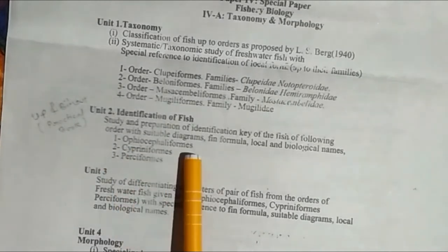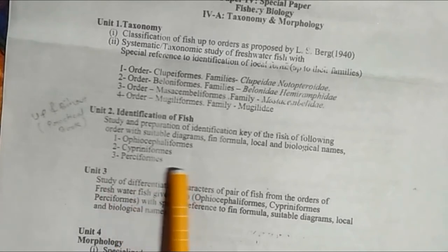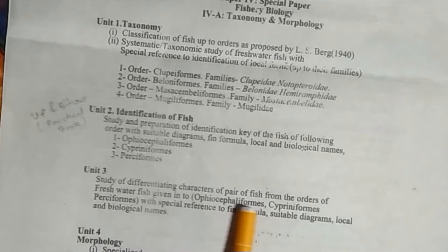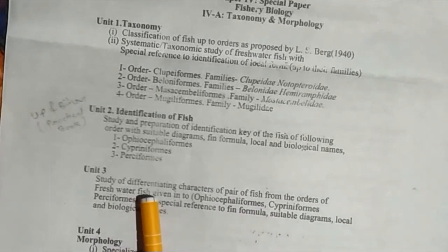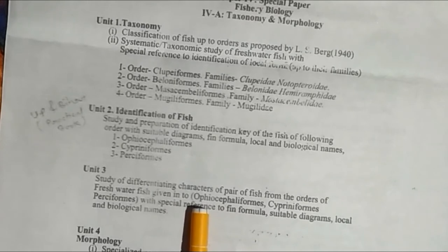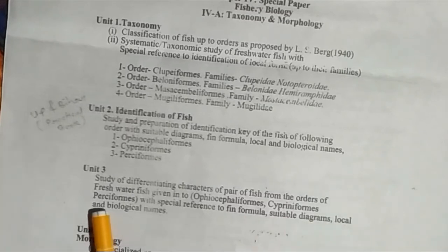The orders covered in Unit Second include Ophiocephaliformes, Cypriniformes, Siluriformes, and Perciformes. Unit Third covers differentiating characters of pairs of fish from the orders of freshwater fish — Ophiocephaliformes and Cypriniformes — and Perciformes, with suitable diagrams and local and biological names.